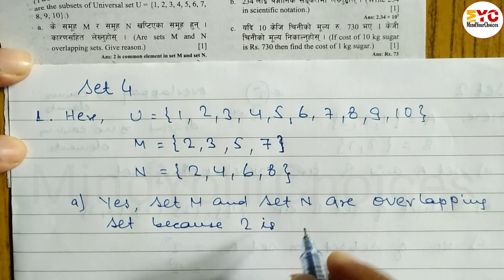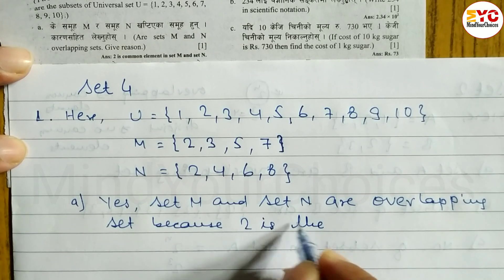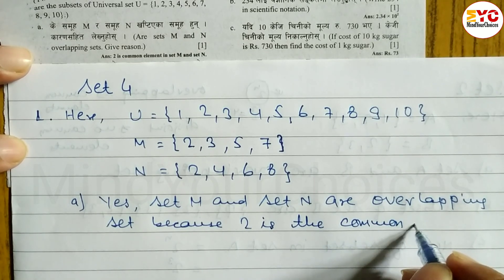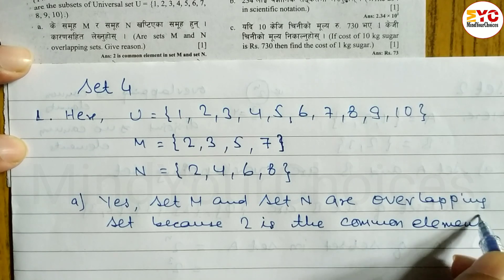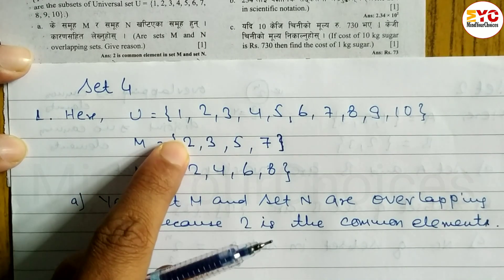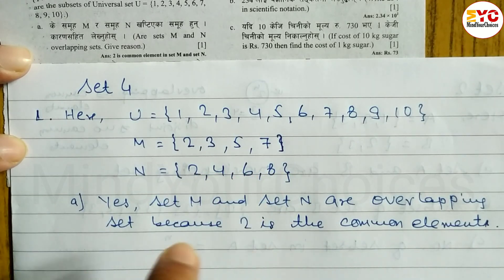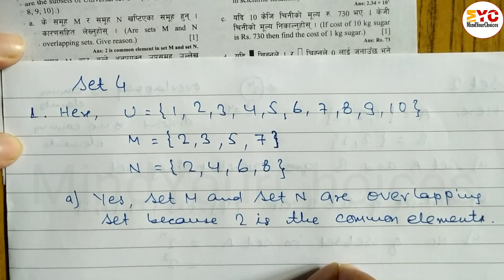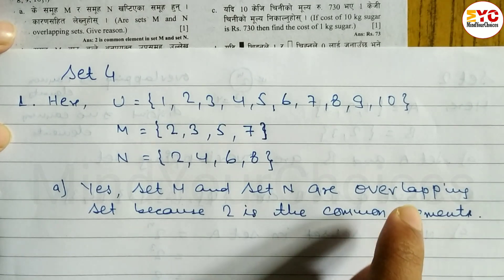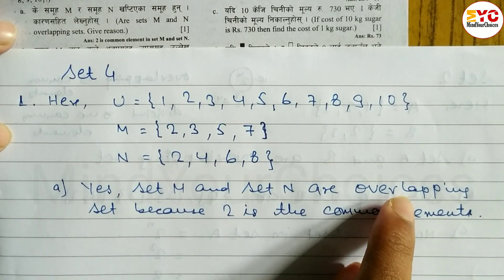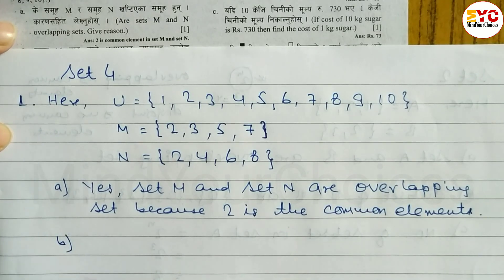...2 is the common element. Here 2 is in set M and 2 is also in set N — so 2 is a common element. When two sets have at least one common element, they are called overlapping sets. If there are no common elements, the two sets are called disjoint sets.